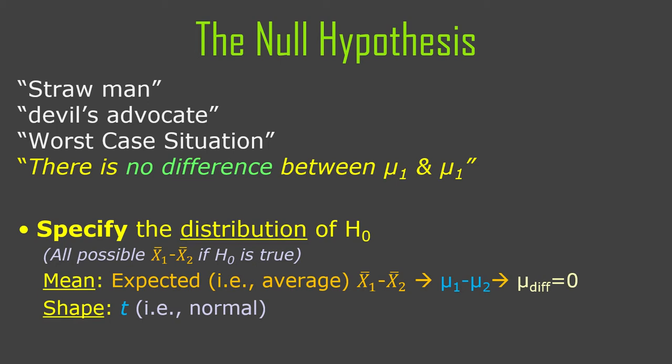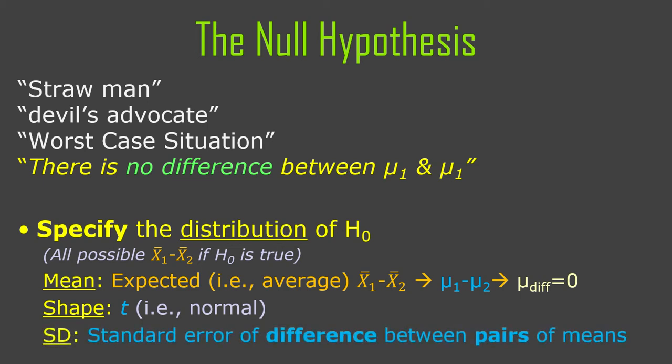The shape of this distribution will be t — technically it's a normal distribution, but we have to use a t distribution to accurately estimate it. The standard deviation of that distribution — the distribution of all possible differences between means — we call the standard error. Specifically, it's the standard error of differences between means, or sometimes just the standard error of the difference.